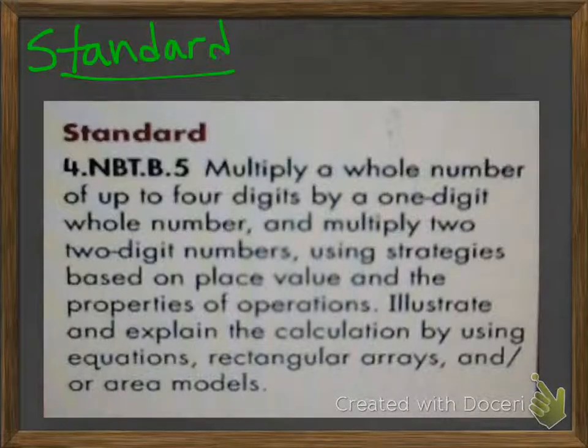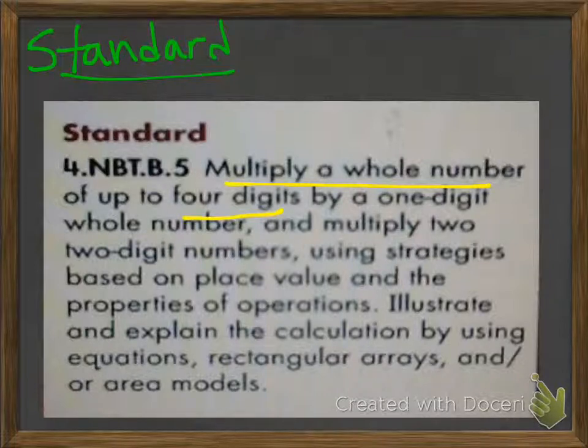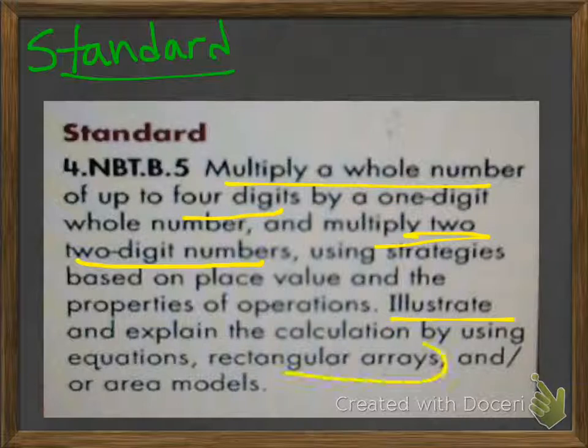The standard is to multiply a whole number of up to 4 digits by 1-digit whole numbers and multiply 2-digit by 2-digit numbers using strategies based on place value and the properties of operations. We can illustrate and explain the calculation by using equations, rectangular arrays, or area models.